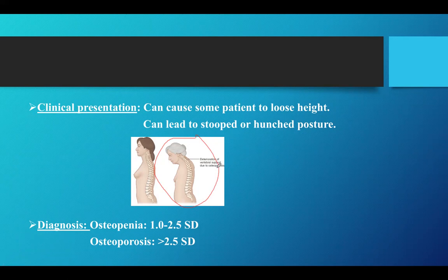How do we diagnose osteoporosis? We diagnose osteoporosis with a bone mineral density test, and it is qualified as a T-score. If you have osteopenia, the score would be between 1 and 2.5 standard deviations, and anything above 2.5 standard deviations is qualified as osteoporosis.